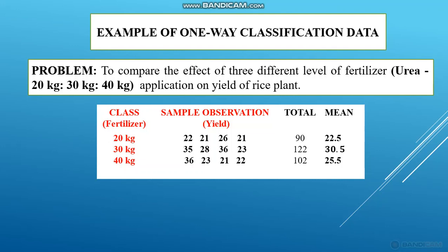The yield of the plant is the sample observation, and I am classifying this data into three classes based on only a single factor — fertilizer. We have three classes: 20 kg, 30 kg, and 40 kg. So we are classifying the data based on only this single factor across three classes. This is an example of one-way classification data.